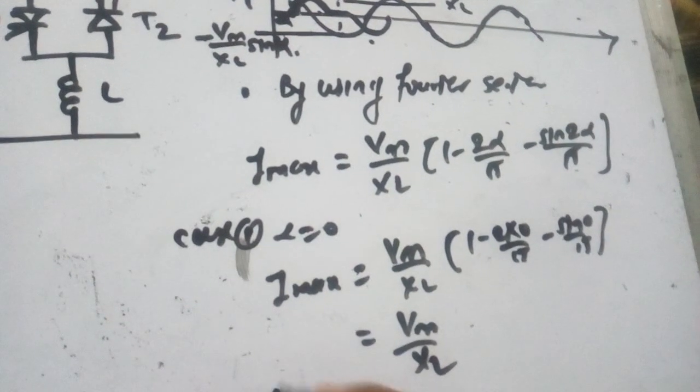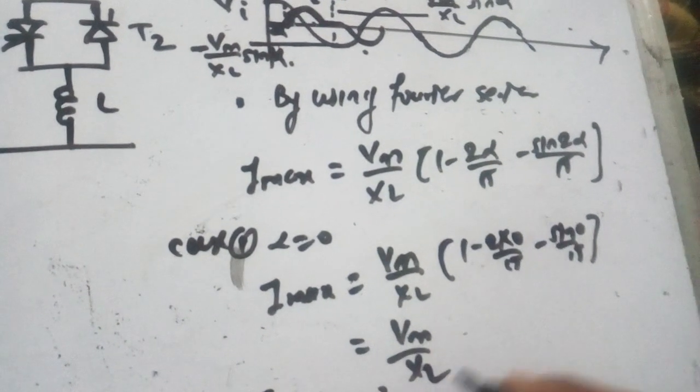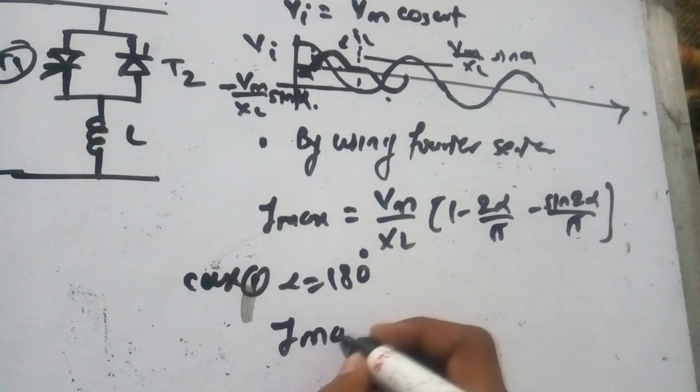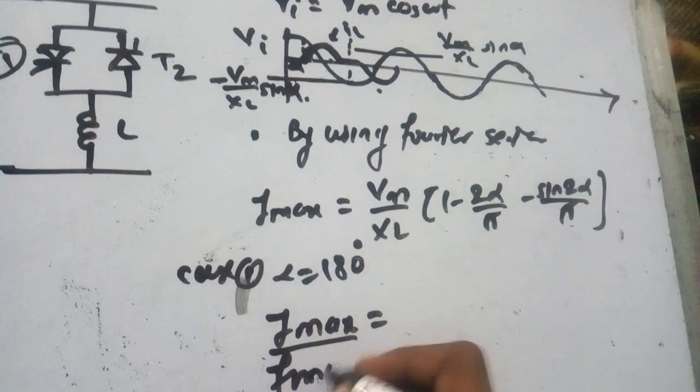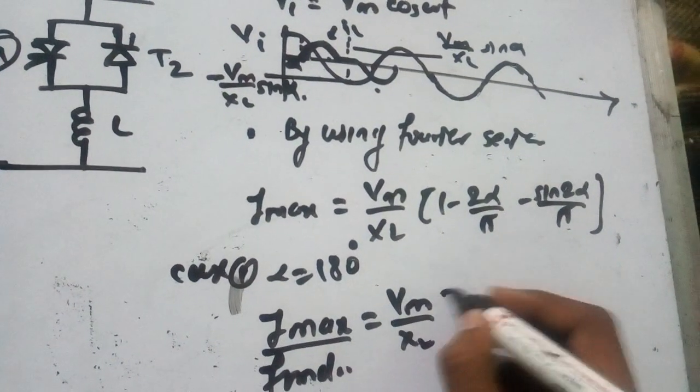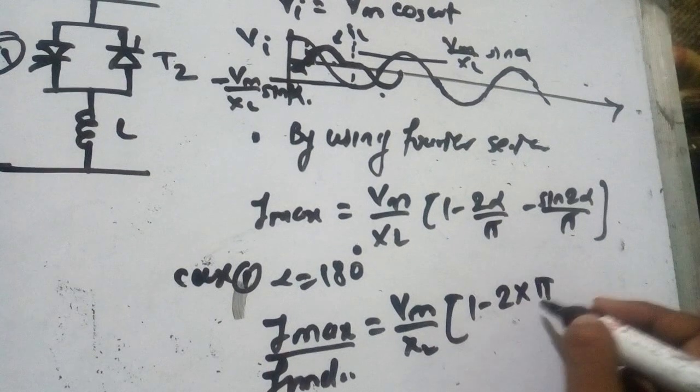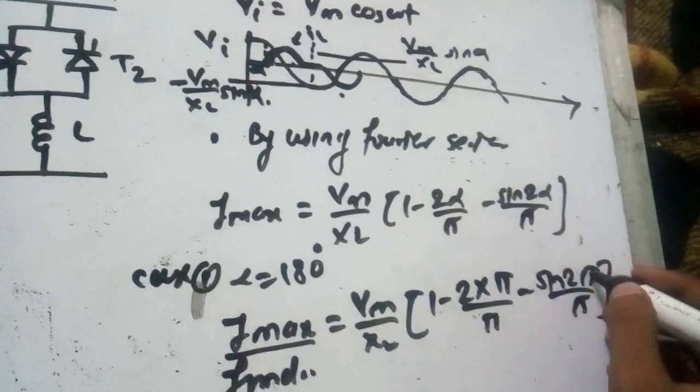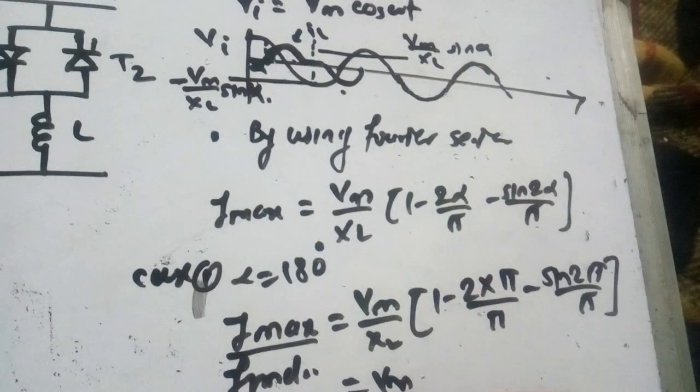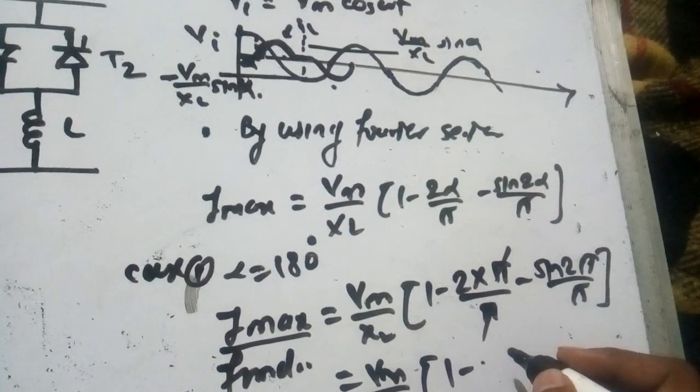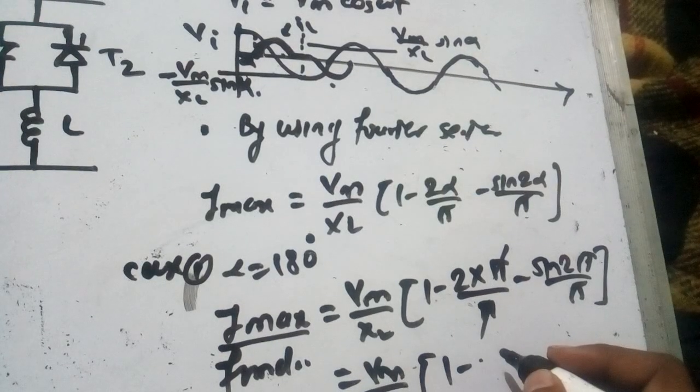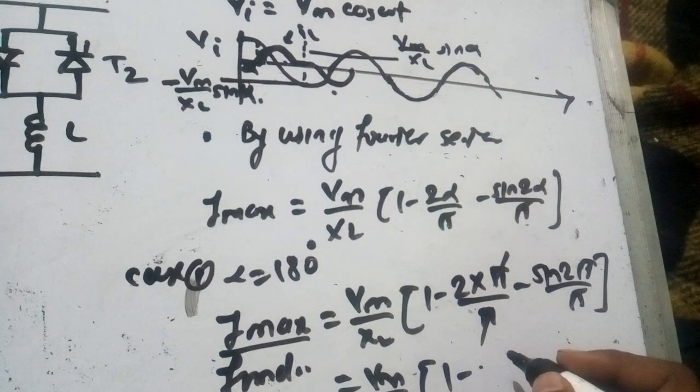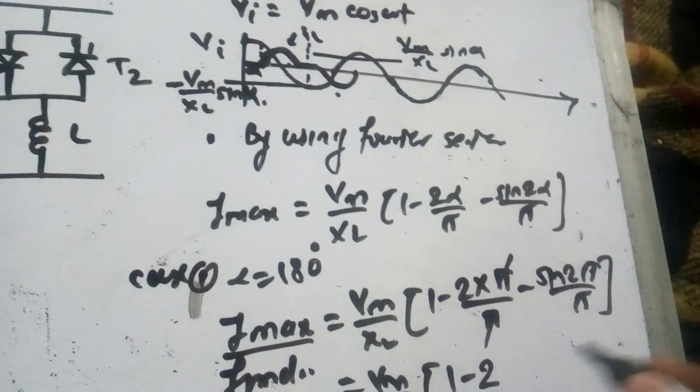Case number second: alpha equals 180 degrees. Then Imax equals Vm upon XL times one minus two pi upon pi, so sine 2pi equals 0, which gives Vm upon XL times one minus zero, which cancels out.